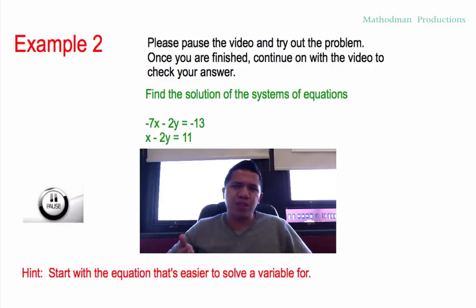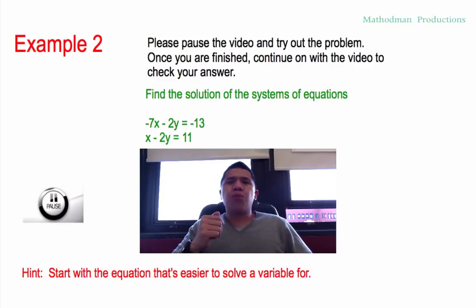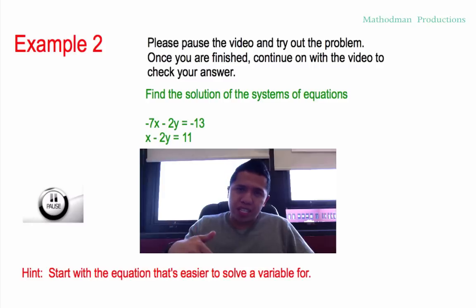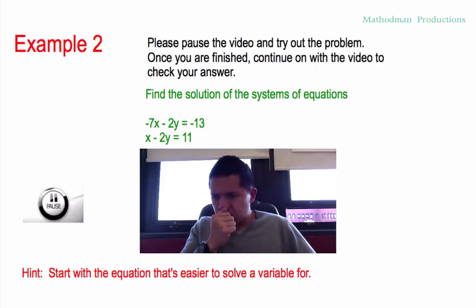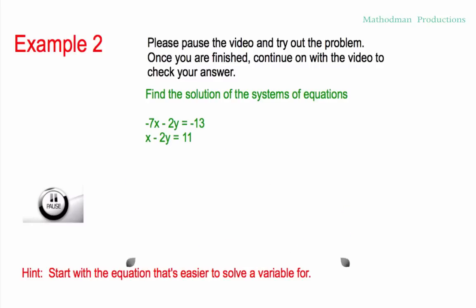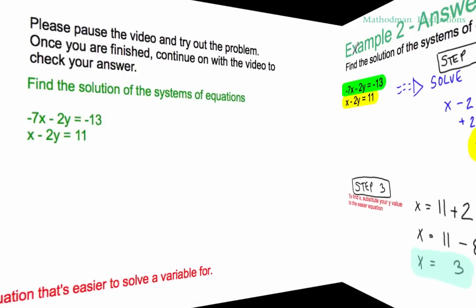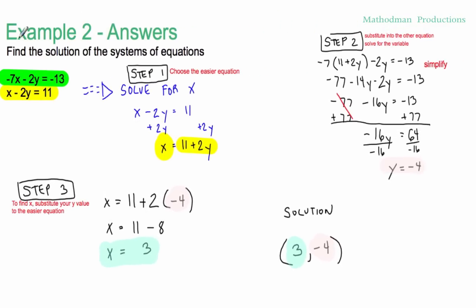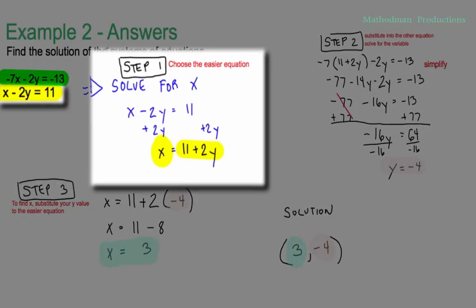Before you start, I'll give you a little hint: start with the easier equation and use it onto the other — it's the bottom one. For example 2, the first thing you had to do was choose the easier equation. I would have chosen the bottom one because it's easier to solve for x.